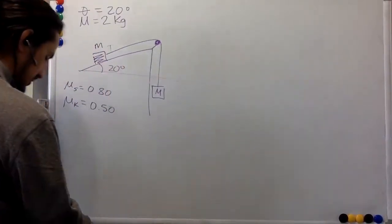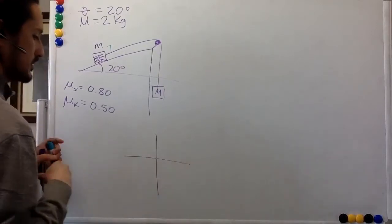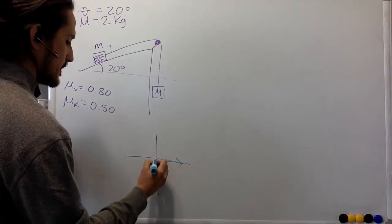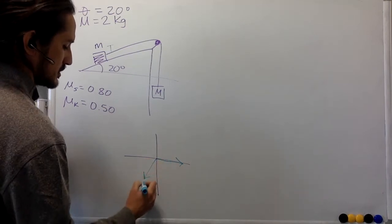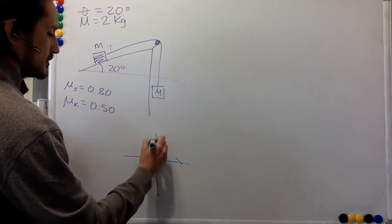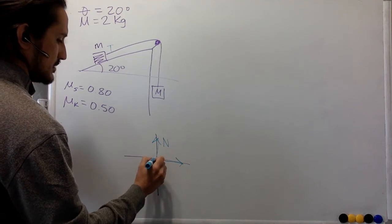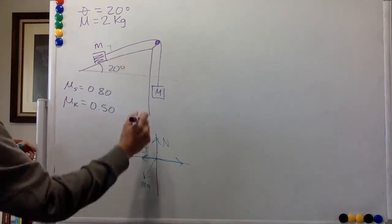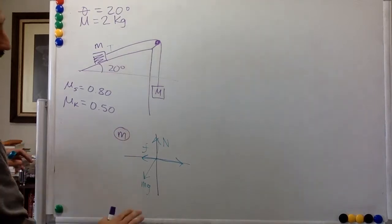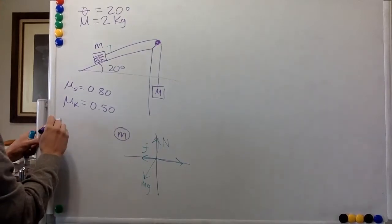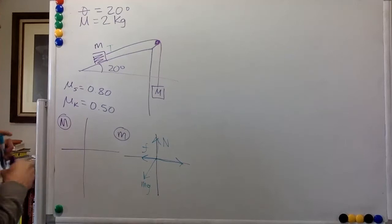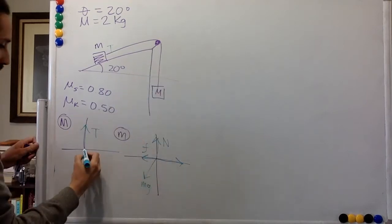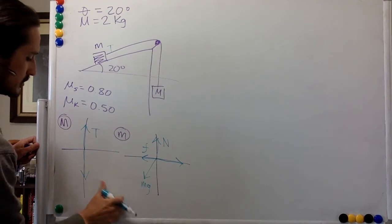So we have tension in this direction, weight in this direction, normal in this direction, and friction in this direction. For large M, things are simpler: we just have tension going up and weight pulling down — that's capital Mg.